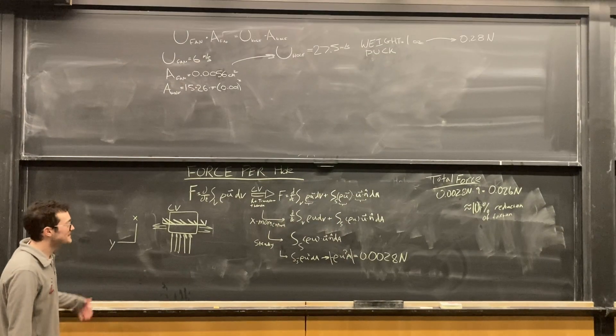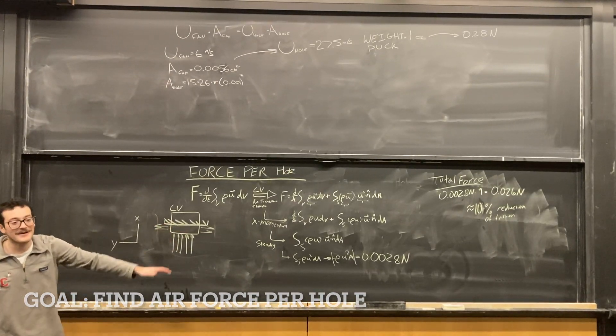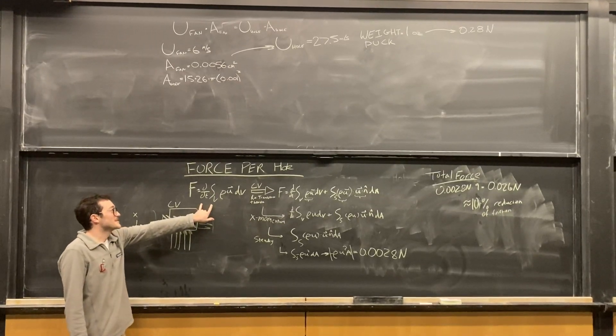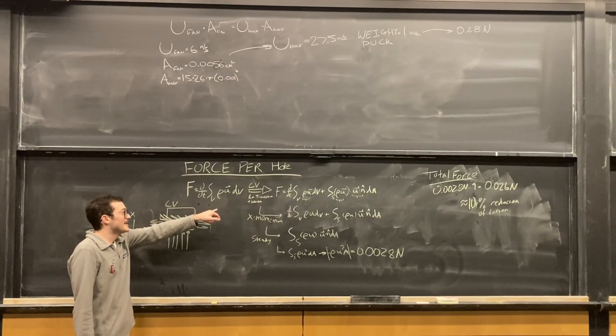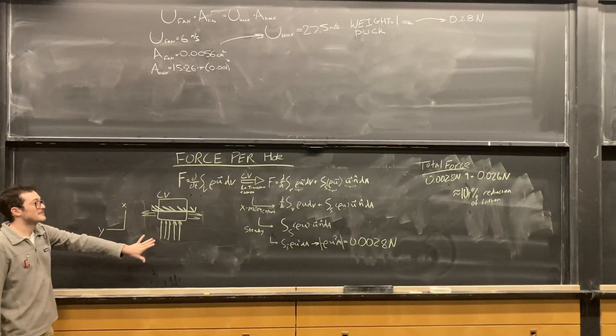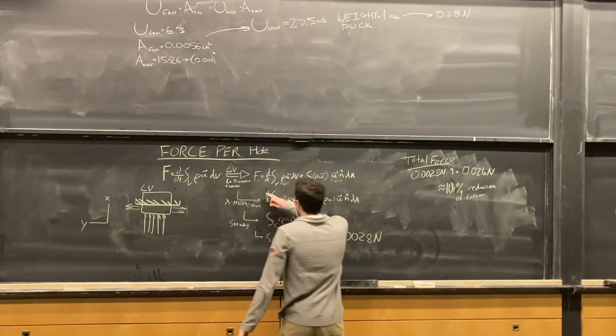We use conservation of momentum to calculate the force per hole on the air hockey table. First we start with Newton's second law for conservation of momentum for the force. Then we use the control volume instead of a control mass of the Reynolds transport theorem with these coordinates to move to the force equal to the rate of change of momentum in the volume plus the rate of momentum flux across the surface.